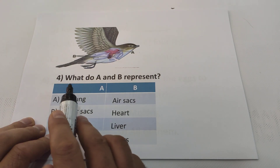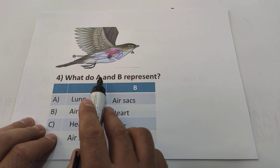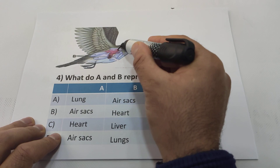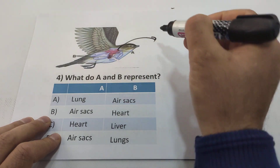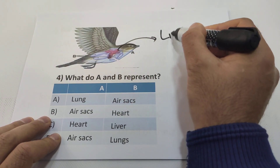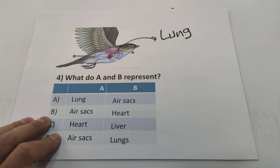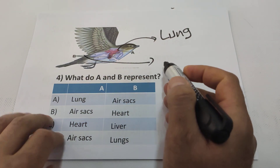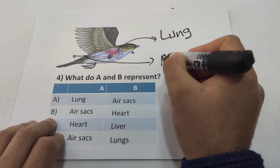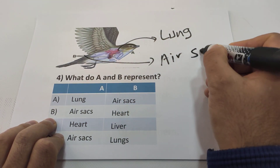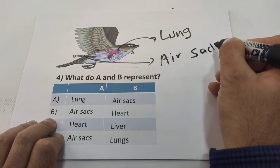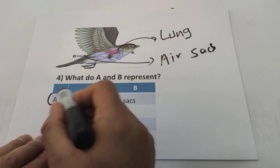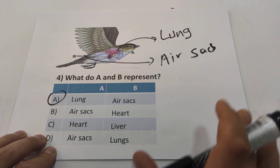Question four: what do A and B represent in the diagram? Students, these are going to be air sacs. So the answer will be A.